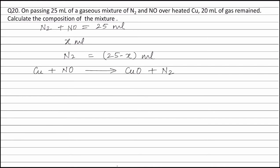The volume of nitric oxide which reacts with copper is x ml. Now, for a gaseous reaction under similar conditions of temperature and pressure, relative volumes represent relative number of moles. Applying the principle of atom conservation on nitrogen atoms: